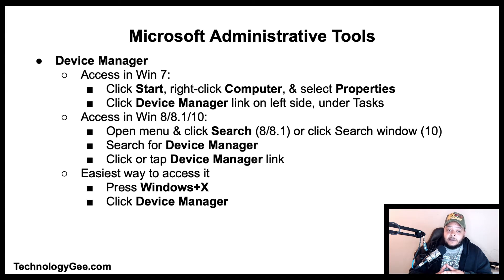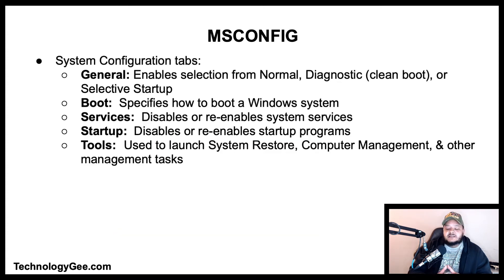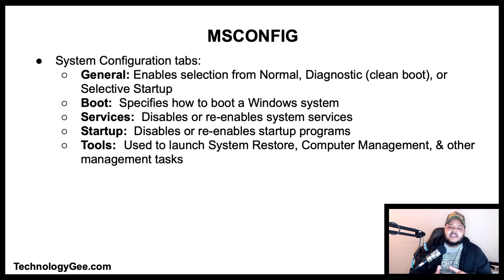System Configuration, or msconfig.exe, is a system utility to troubleshoot the Microsoft Windows startup process. It can disable or re-enable software, device drivers, and Windows services that run at startup, or change boot parameters. The tabs are: General — select Normal, Diagnostic (clean boot), or Selective startup; Boot — specifies how to boot Windows; Services — disables or re-enables system services; Startup — disables or re-enables startup programs.